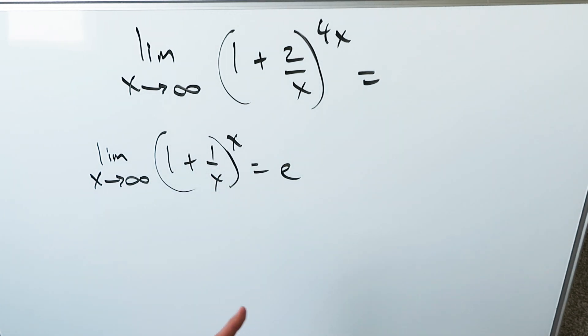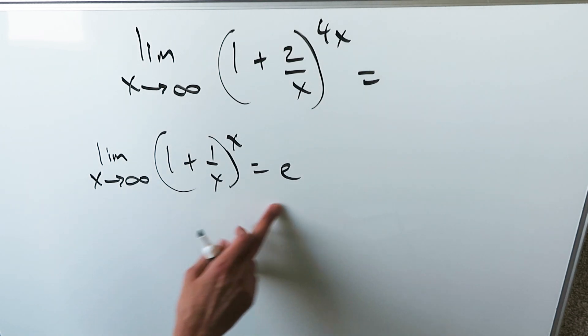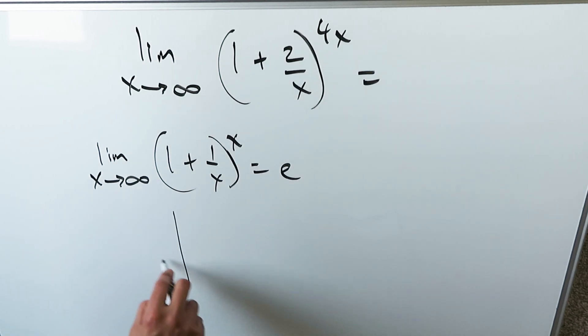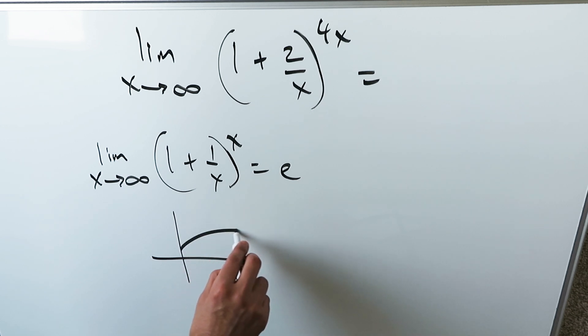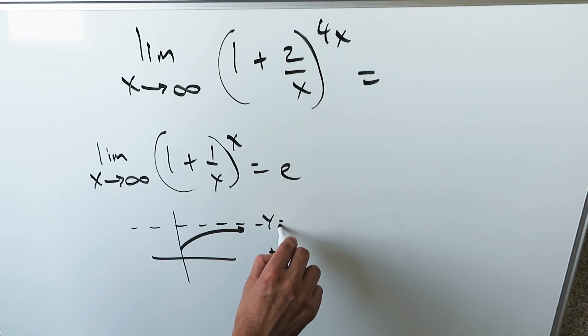It's a limit definition you should memorize. It gives you the value of e because when you're graphing it out, you're looking at a function which is approaching a horizontal asymptote. I'm only showing you in the one direction, in the direction of positive infinity, and this is y equals e.